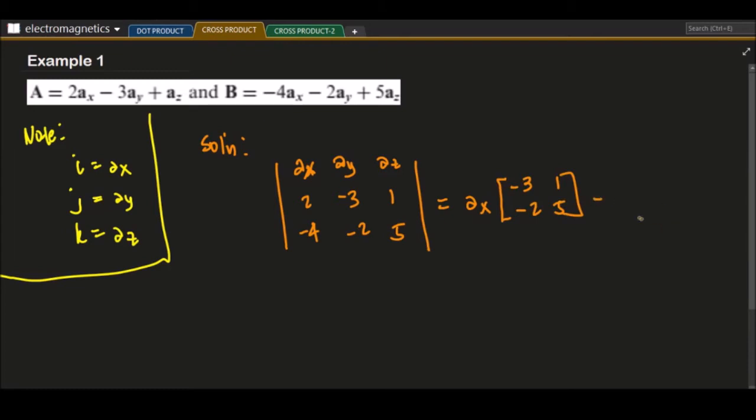Then you have minus a sub y. We just cover this one, and we will be left with 2, negative 4, 1, and 5. Then we have plus a sub z. So we have 2, negative 4, negative 3, negative 2.